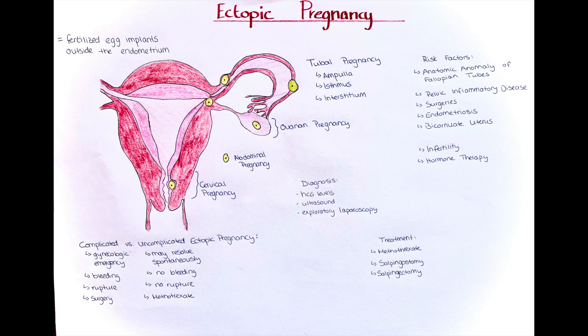In hemodynamically unstable patients with a ruptured or impending rupture, emergency surgery is indicated. In all other patients, the decision for medical, expectant, or surgical treatment should be guided by clinical, laboratory, and radiological findings, as well as patient-informed choice based on a discussion of benefits and risks. Medical treatment includes giving methotrexate, which inhibits folate-dependent steps in DNA synthesis to terminate the rapidly dividing ectopic pregnancy.